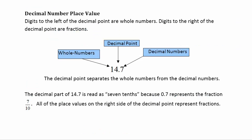Now let's take a look at decimal number place value. The digits to the left of the decimal point are whole numbers. The digits to the right of the decimal point are fractions. They used to call these decimal fractions, because any of the digits to the right are going to represent a fraction. So the decimal point separates the whole numbers from the decimal numbers, or fractions.